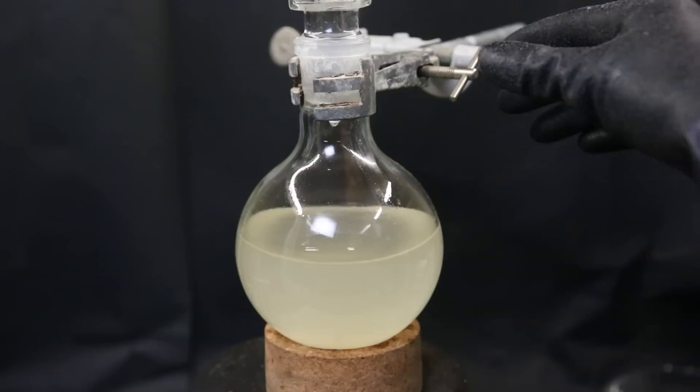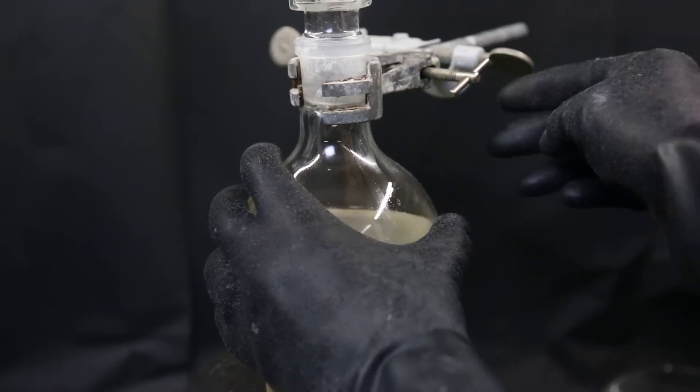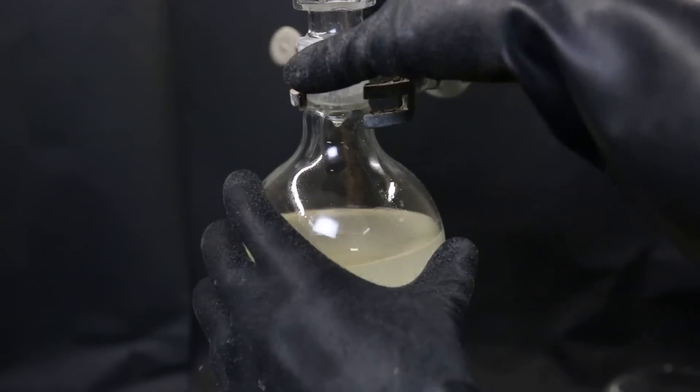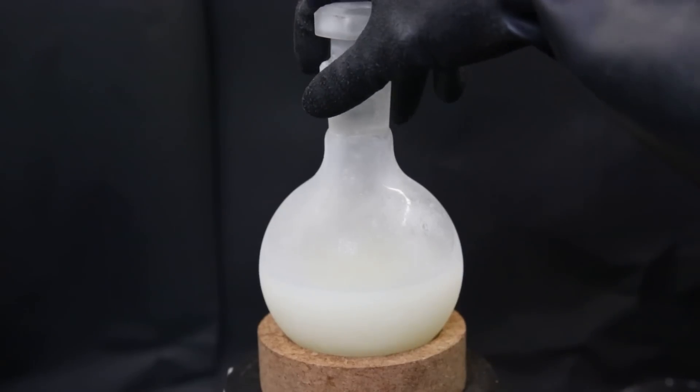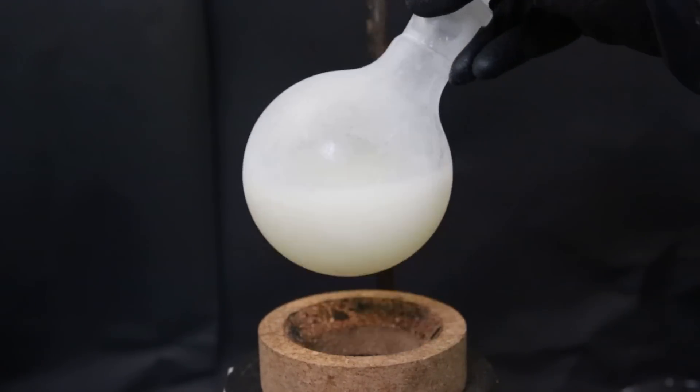Now to crystallize out as much of the product as possible, I will put it into the freezer at minus 26C for a day. After taking it out of the freezer, we can see a bunch of product has crystallized out.